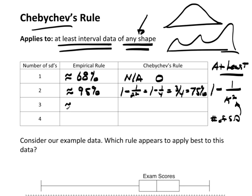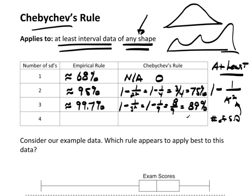At three standard deviations, the empirical rule says approximately 99.7%. Chebyshev's rule gives one minus one over three squared, which is one minus one-ninth, which is eight-ninths. When you put that in a calculator, you get 0.8888... repeating, so approximately 89%. So Chebyshev's says at least 89% within three standard deviations, and the empirical rule says approximately 99.7%. They don't disagree with each other.